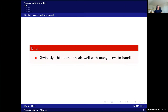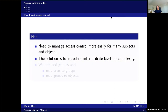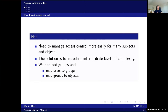Obviously, this is not that scalable if we get a lot of identities and a lot of objects. So we need to do something about this to make it more manageable. What we want to do is introduce some intermediate level of complexity. For instance, we can add groups — we simply map users to groups and then map groups to objects. The groups will be fewer than the users in total, so it's easier to manage the groups rather than the users individually.